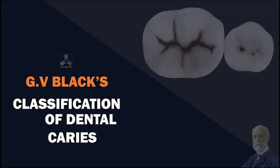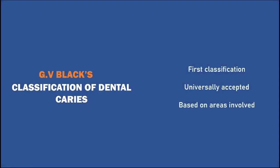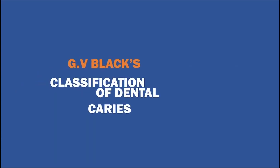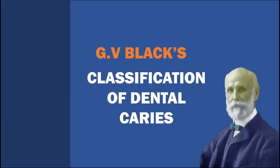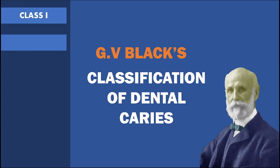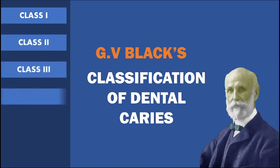G.V. Black's classification of dental caries is one of the first introduced classifications of dental caries which is universally accepted, and the classification is based on the involvement of the caries' surfaces. According to G.V. Black, dental caries can be classified into 6 classes ranging from class 1 to class 6.